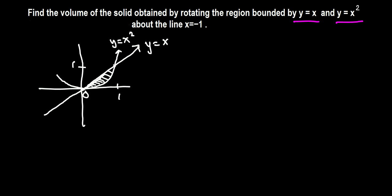Now we want to rotate this region about x equals negative 1. Negative 1 is to the left — on the negative side — so our axis of rotation is here to the left of the region. We want to rotate this bounded region about that line.